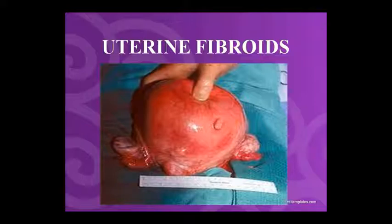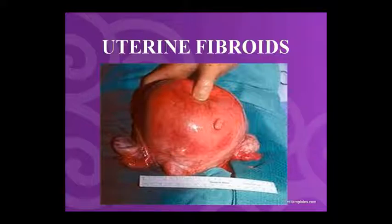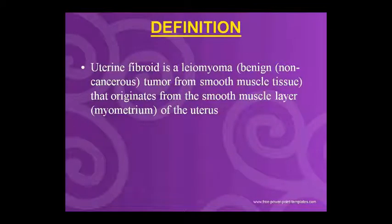Uterine fibroid is also known as uterine myoma, fibroma, or leiomyoma — these are all names for the same condition. This is a benign tumor in women, also called myoma, fibroma, or fibroid. It is a tumor of the uterine corpus of smooth muscles, and can also be found in the cervix or round or broad ligament.